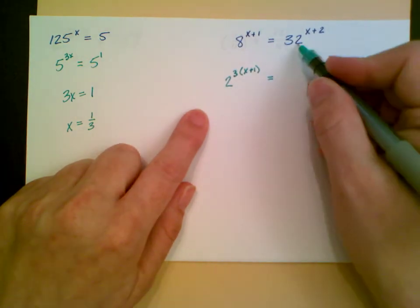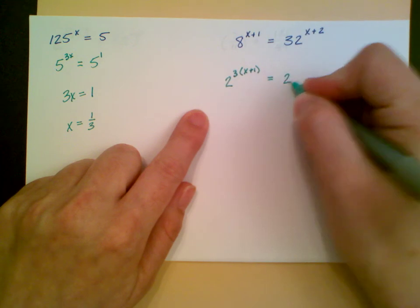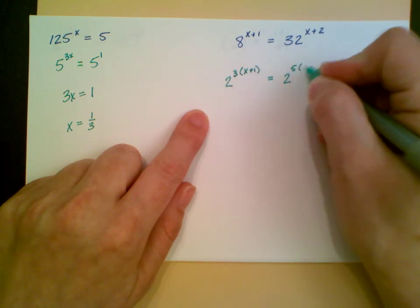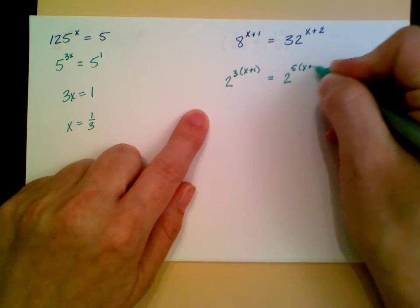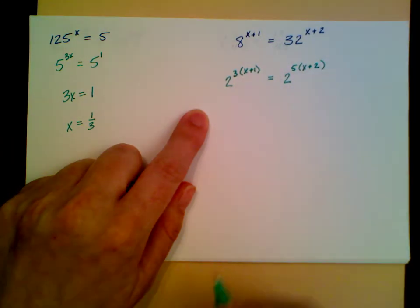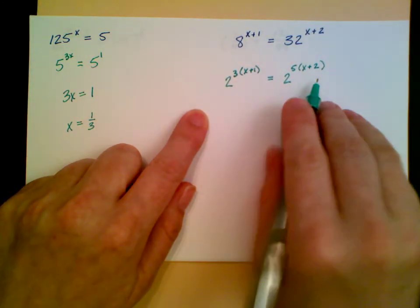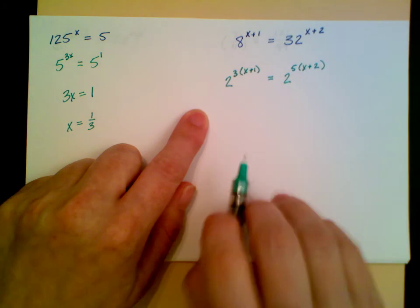So I get 2 to the 3 times the original exponent of x plus 1. 2 to the 5th is equal to 32, so this is 2 to the 5th times x plus 2. Now you can distribute at this step, but I'm just going to set my exponents equal to each other.